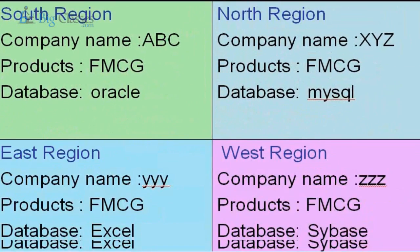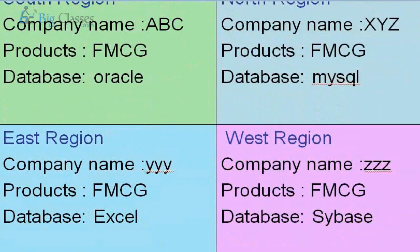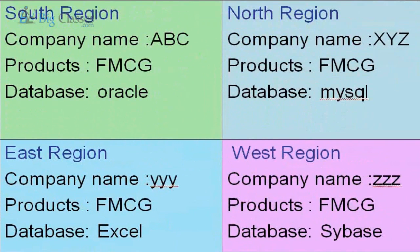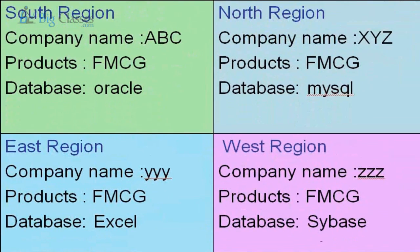The same way, I acquired businesses in the other two regions — east and west. One region was using Excel as their data source to capture business data, and the other region was using a Sybase database. So now my entire business spans four regions — south, north, east, and west — and the entire organization's data is in four different databases: Oracle, MySQL, Excel, and Sybase.